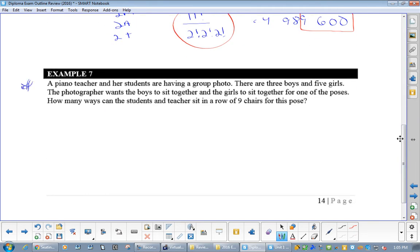Okay, now this one's definitely a harder one, but we have a piano teacher and her students are having a group photo. There's three boys, five girls. The photographer wants the boys to sit together. That's a group. Wants the girls to sit together for one of the poses. How many ways can the students and the teacher in a row of nines sit for this pose? So do you see we basically have three groups?